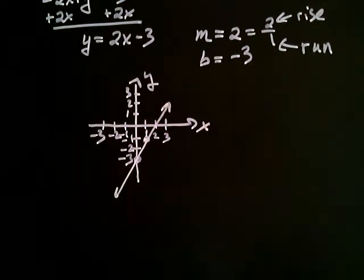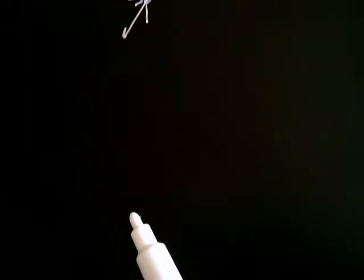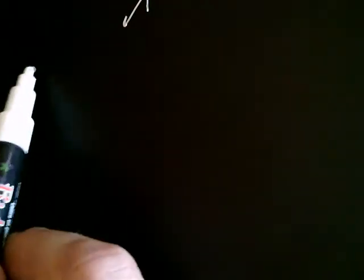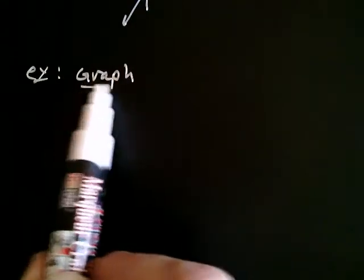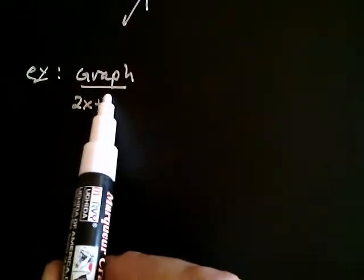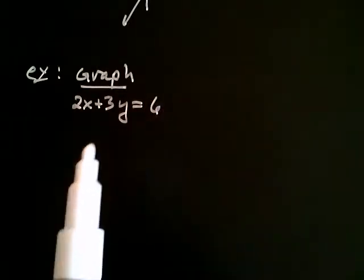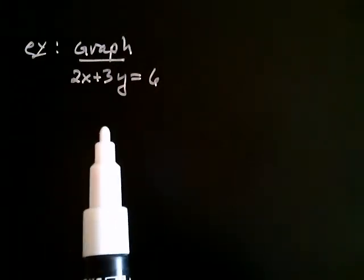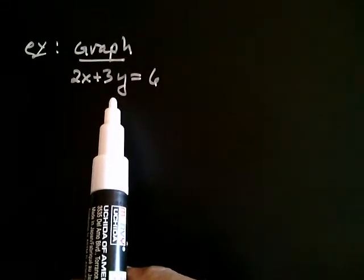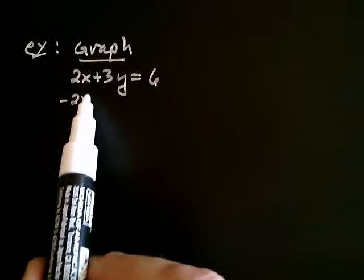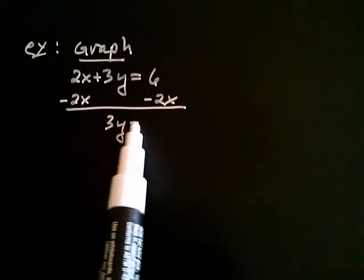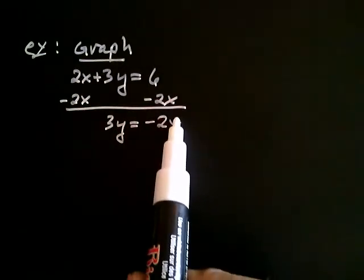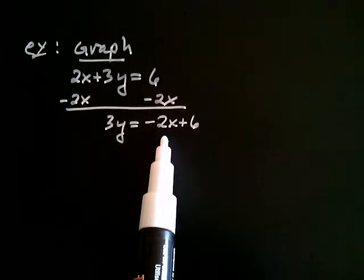Let's take a more complicated example. Let's say we wanted to graph 2x plus 3y is equal to positive 6. Just like in the previous example, the first thing you have to do is isolate your y to put the line into slope-intercept form. So I'm going to subtract 2x from both sides. On the left I have 3y, and on the right I have negative 2x plus 6.